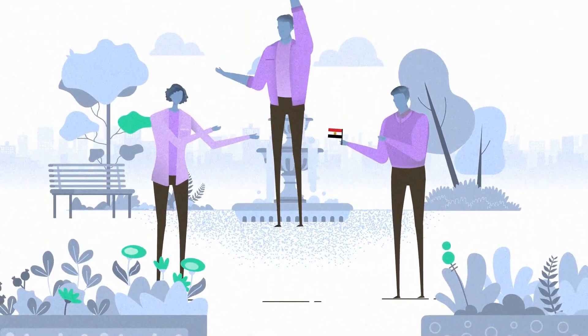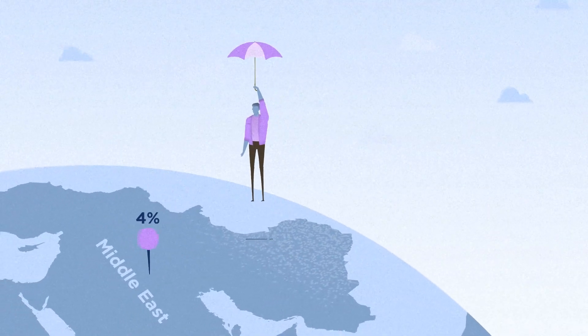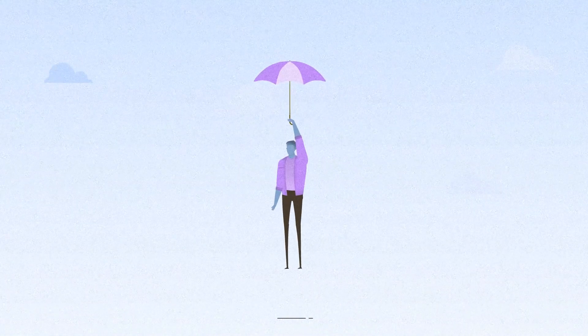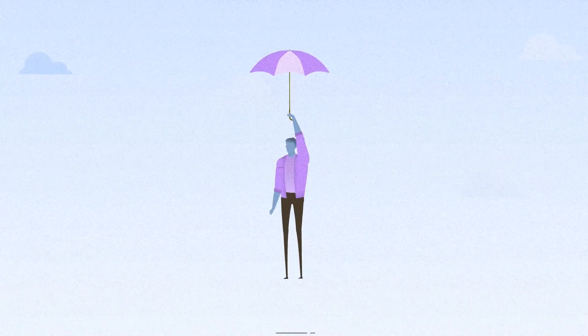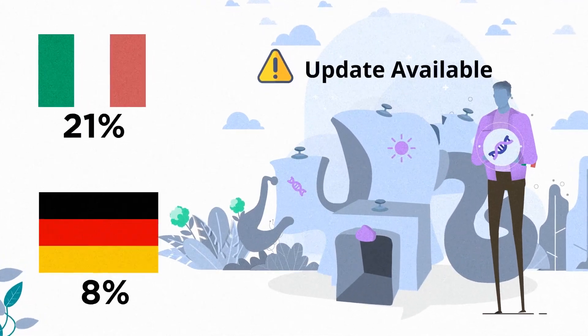So when you receive a DNA test result that doesn't make sense, whether you see places you have never heard of, or you are missing places you know should be there, remember that your DNA is only part of the story and that story may change over time as more data is gathered.